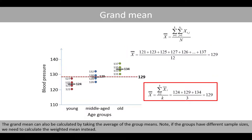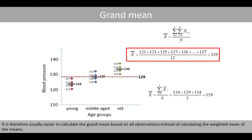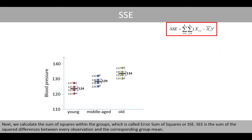The grand mean can also be calculated by taking the average of the group means. Note that if the groups have different sample sizes, we need to calculate the weighted mean instead. It is therefore usually easier to calculate the grand mean based on all observations. Next, we calculate the sum of squares within the groups, which is called the error sum of squares, or SSE.